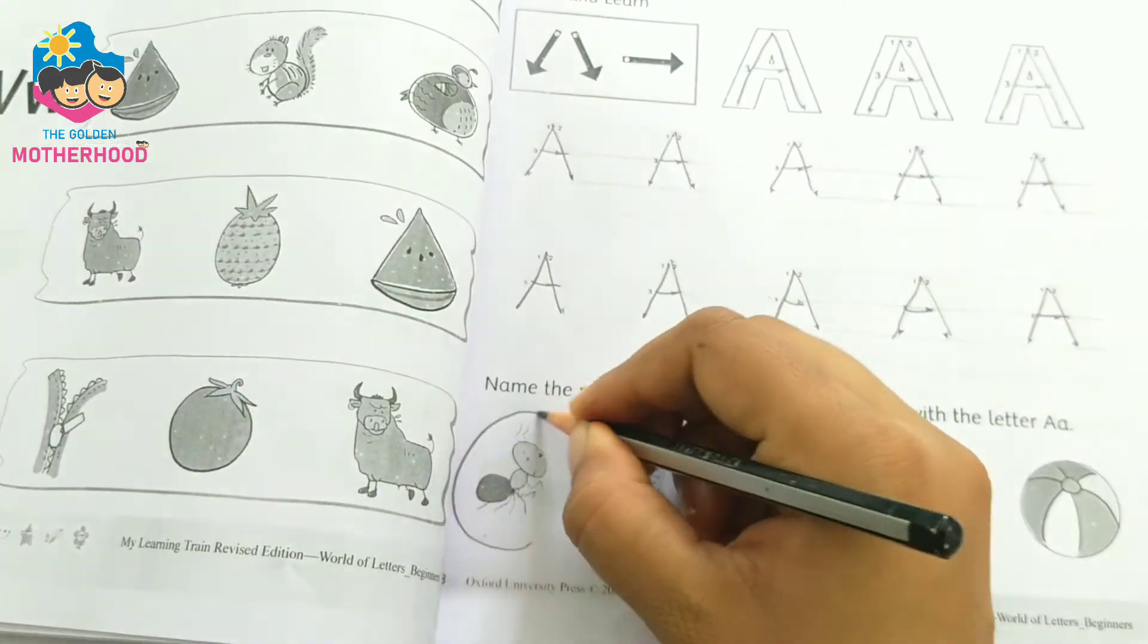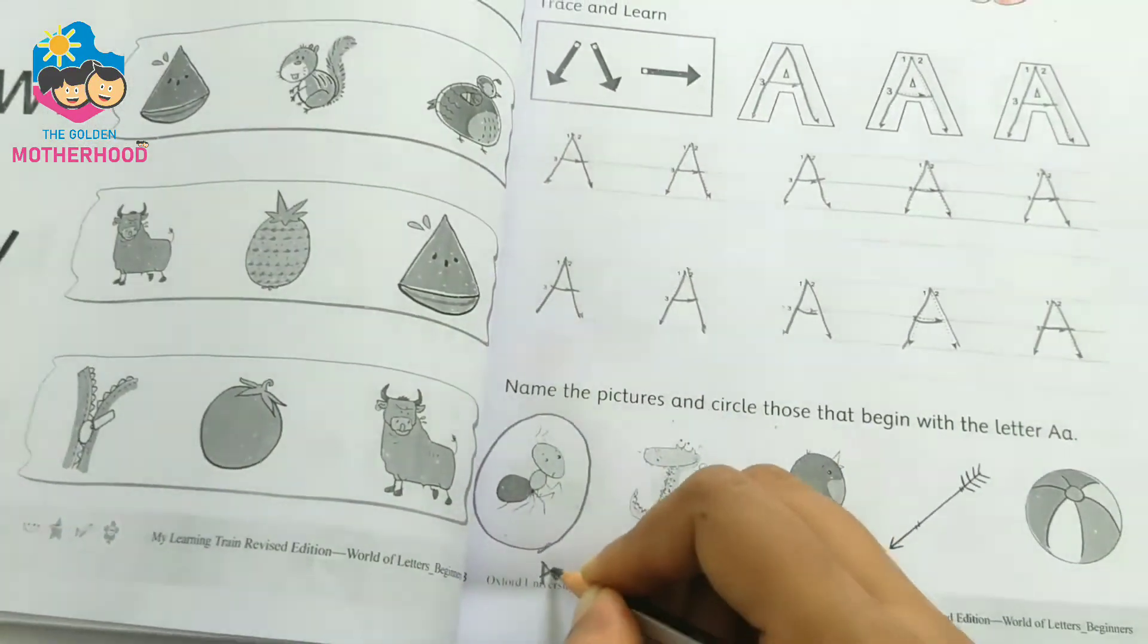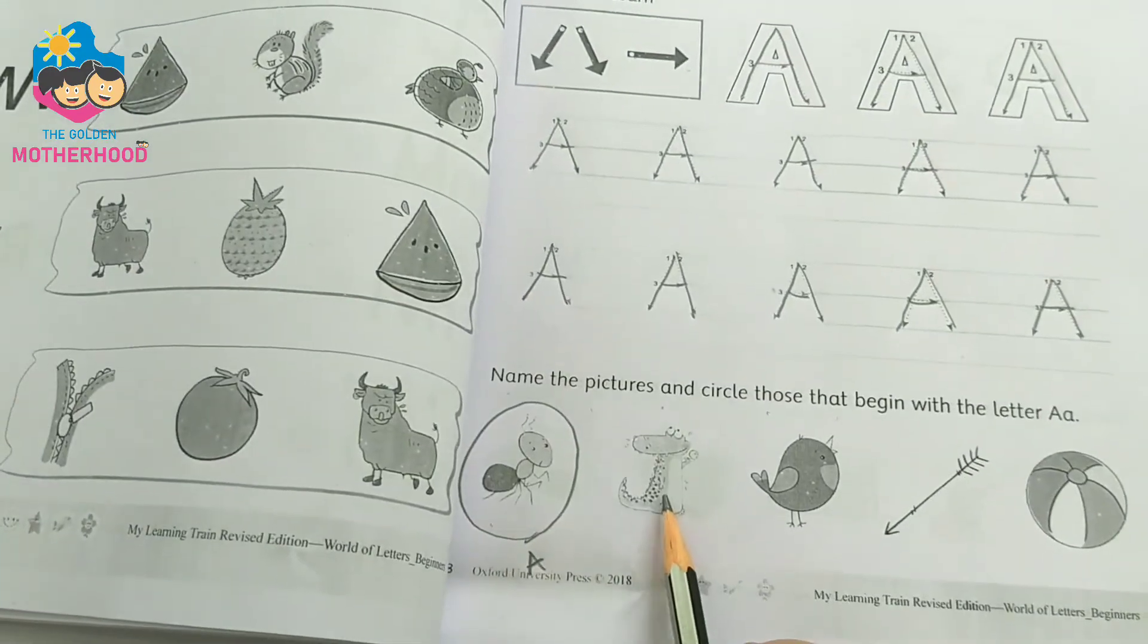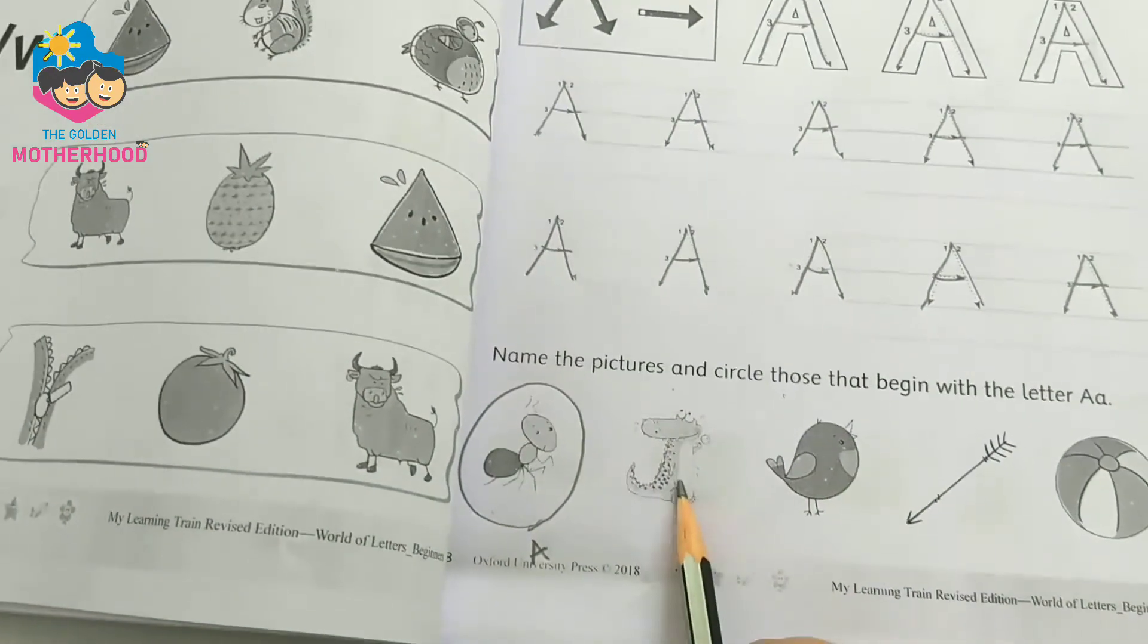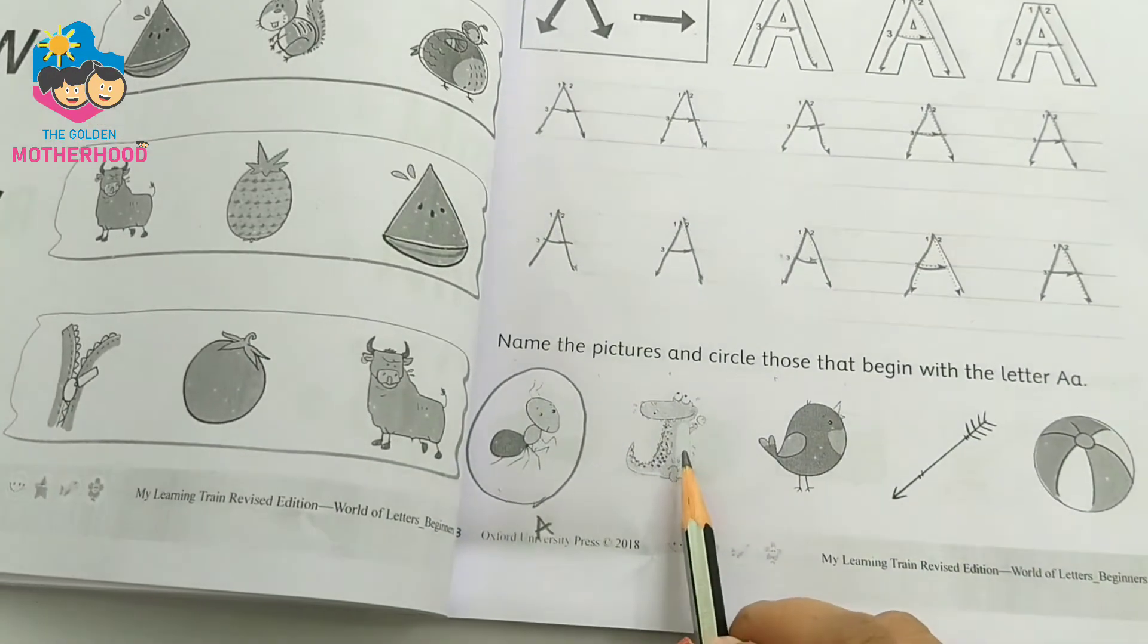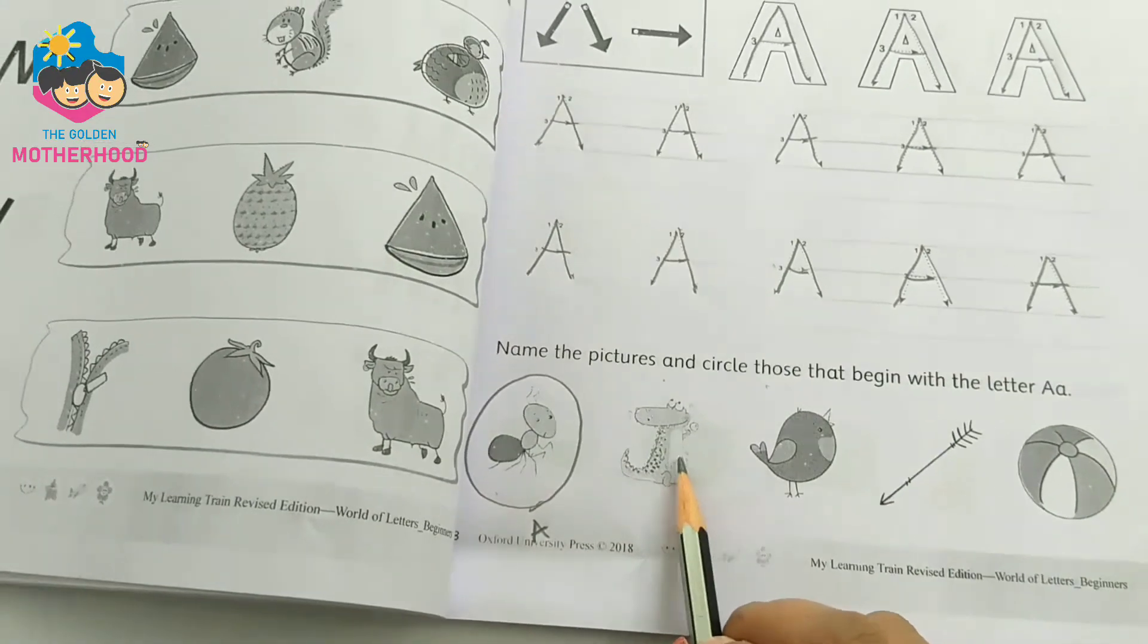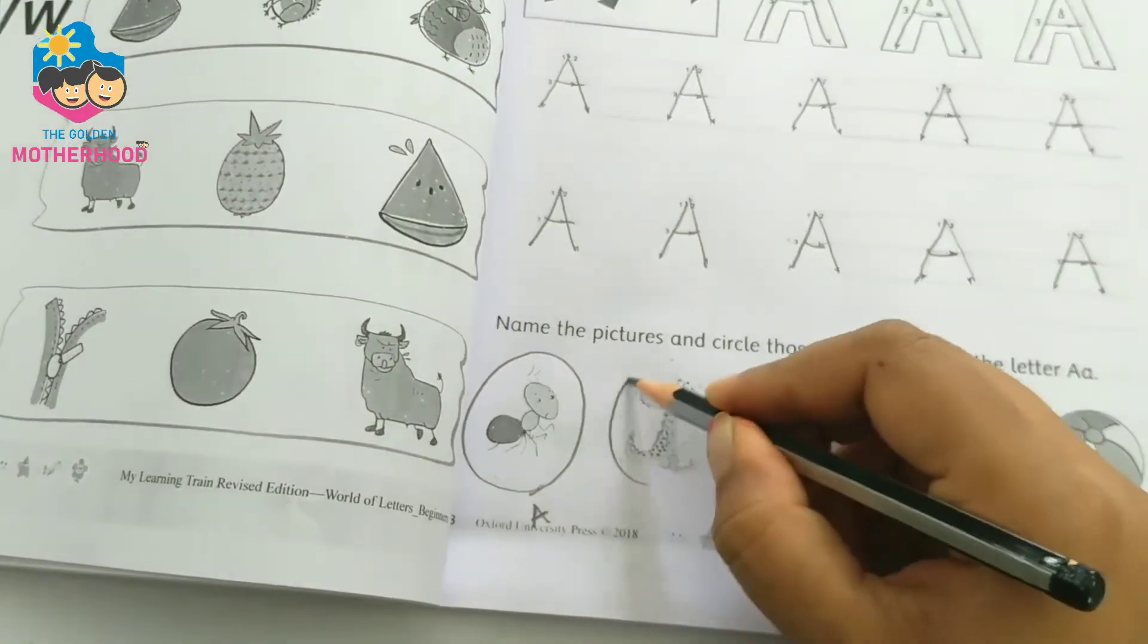A for ant. This is alligator. So alligator begins with the letter A. Circle it.